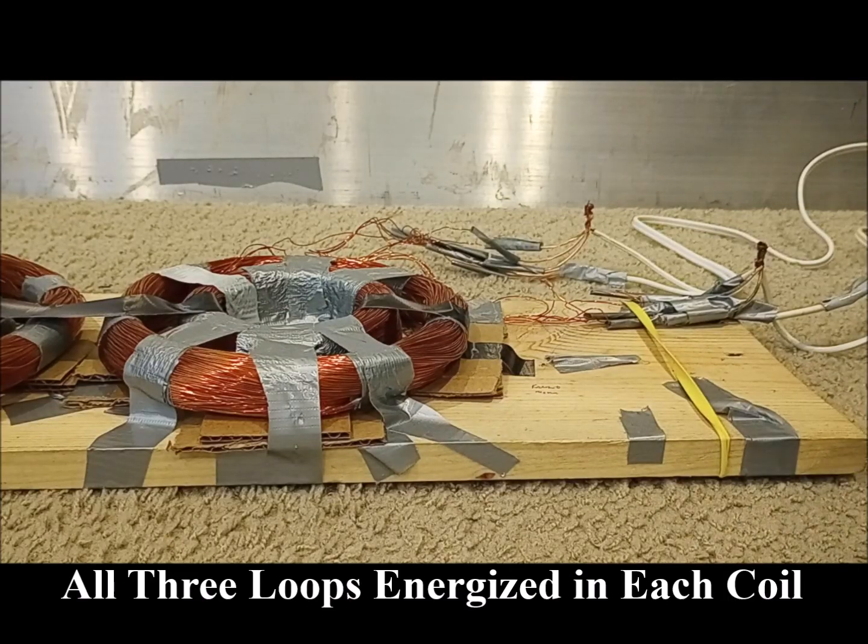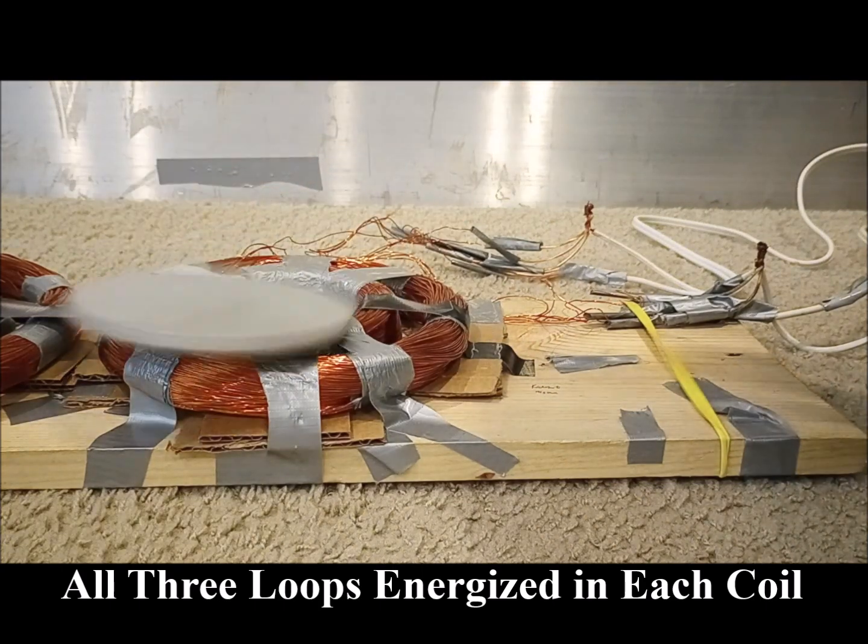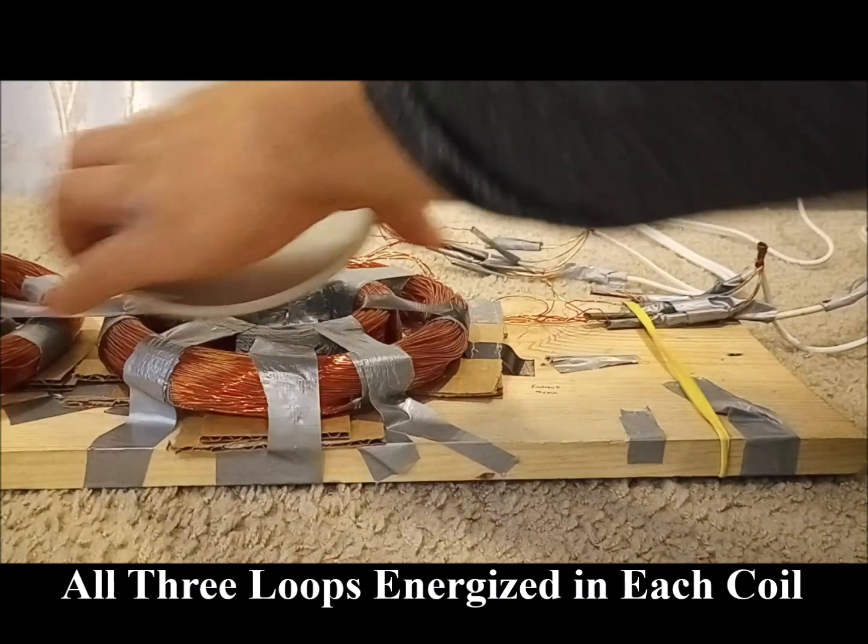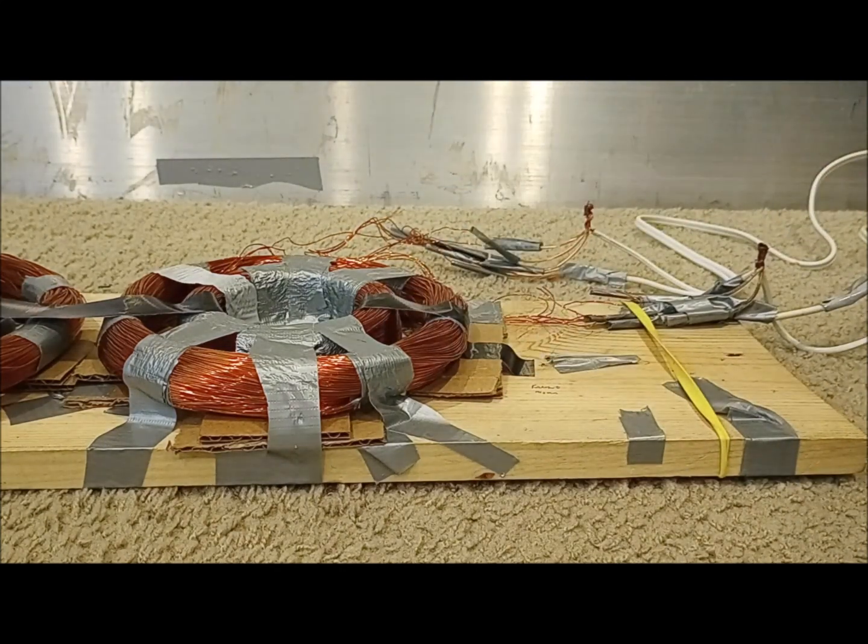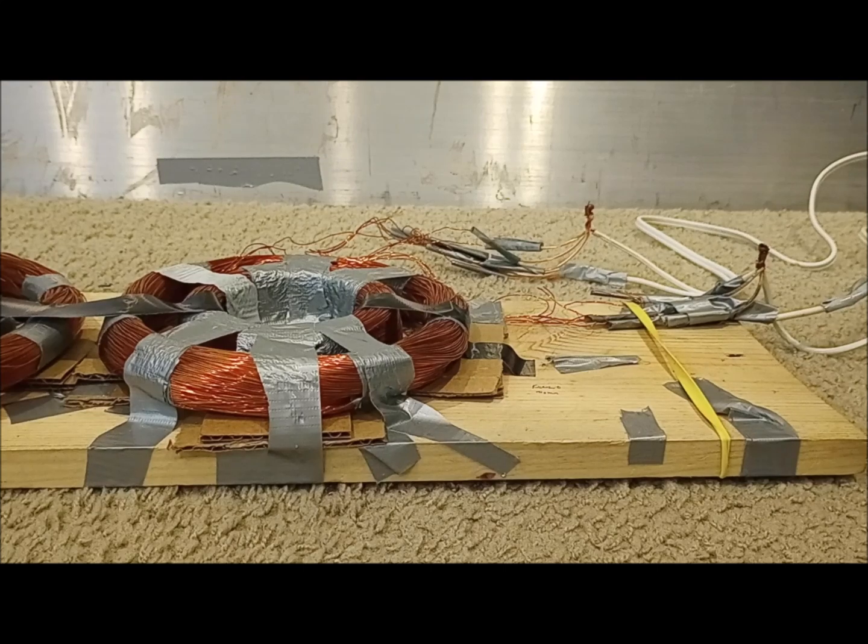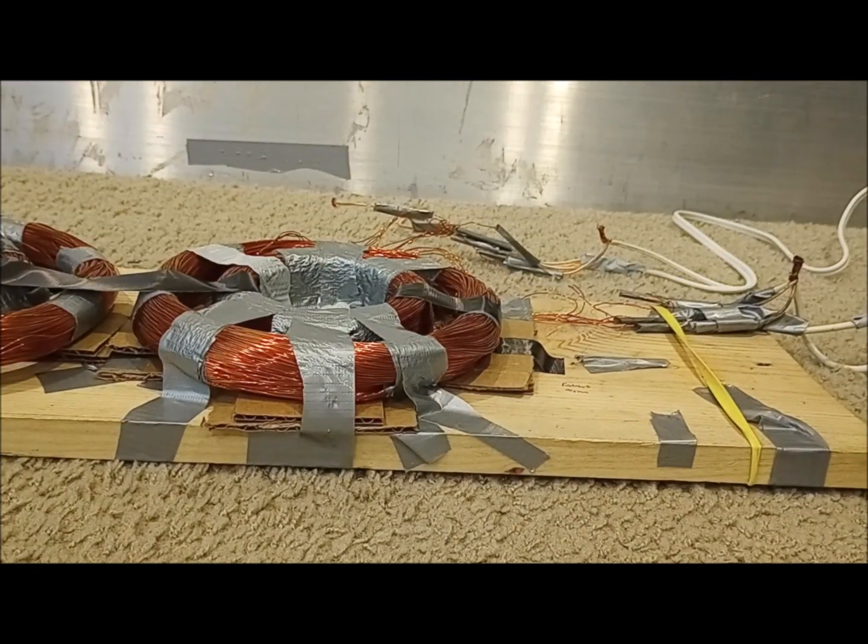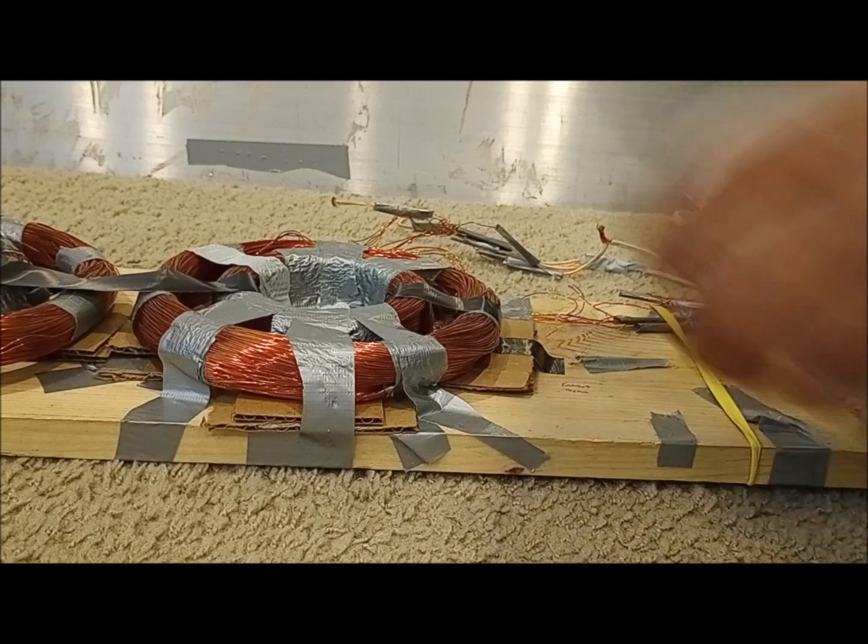When all three loops were energized in each coil there was no stable levitation, only ejection of the aluminum disc. I then tried reducing the power in each coil in relation to the other, beginning with a reduction in power in the outer coil by unwiring one of the loops.